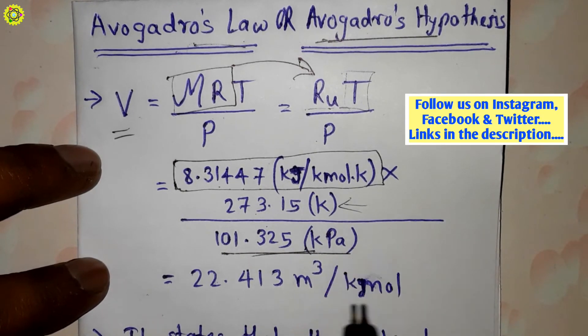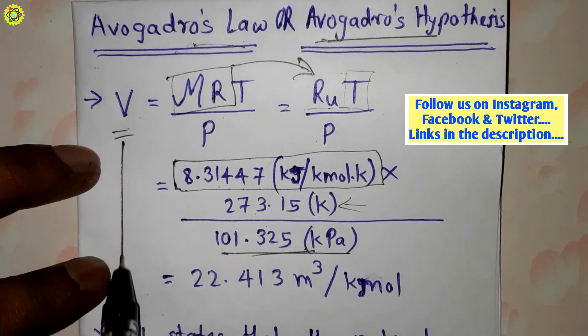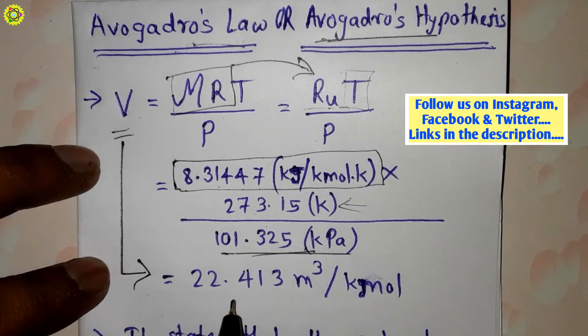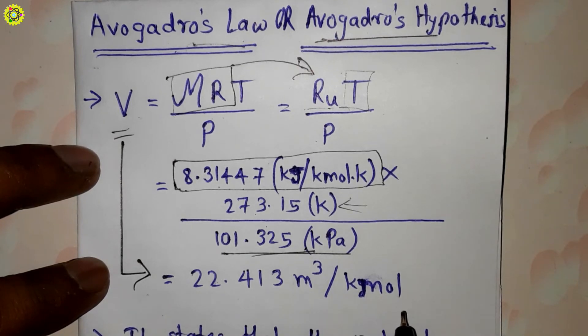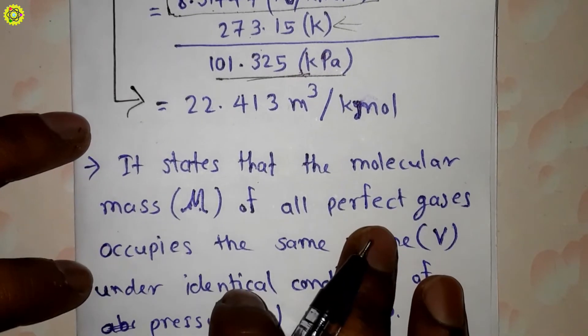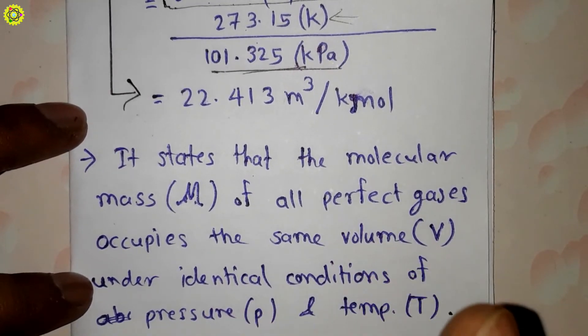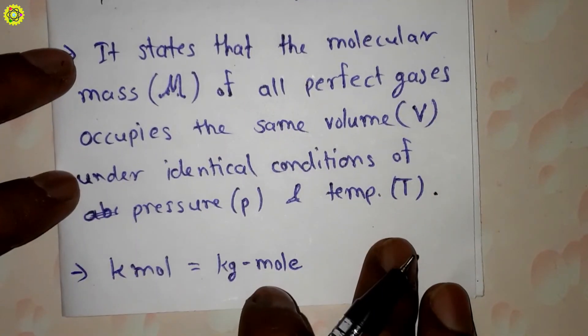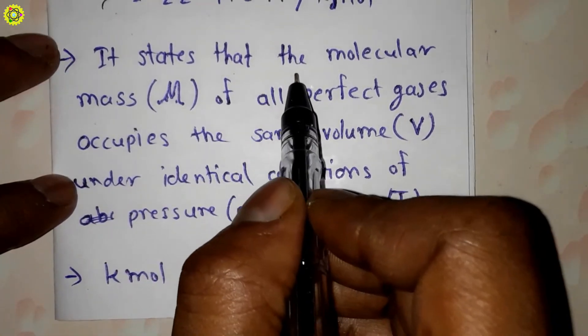And after calculating, we'll get volume equal to 22.413 meter cube per kg-mole. So here, Avogadro's Law or Avogadro's Hypothesis states that the molecular